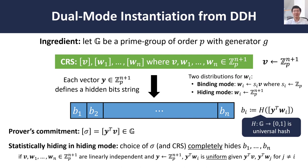Conversely, suppose instead that we sampled the CRS in the hiding mode. In this case, the claim is that the value of y^T wᵢ is perfectly — or statistically — hidden, even given the commitment as well as the openings to any other bit. This follows by a linear independence argument: in the hiding mode, if all of the w's are uniformly random, then with overwhelming probability all of these vectors in the CRS form a full rank collection. If we learn y^T times any of these vectors, it does not reveal any information about y^T times any of the other vectors, just by linear independence. So if we sample the w's in hiding mode, the values of the unopened bits are statistically hidden.